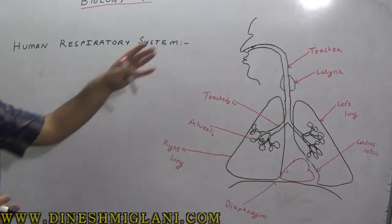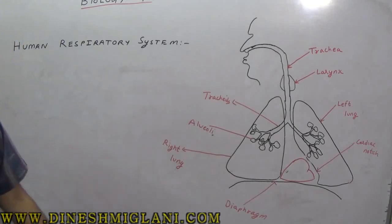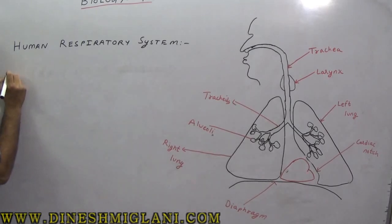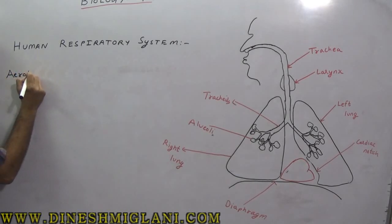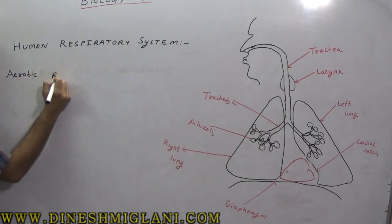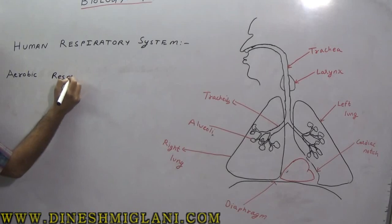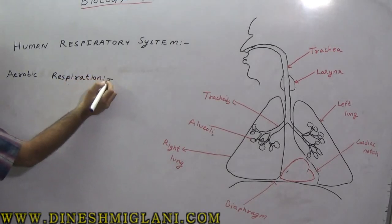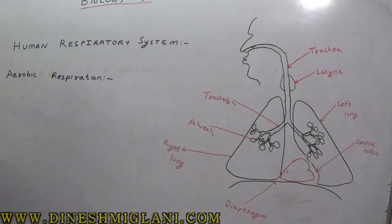Respiration is the work of the human respiratory system. Now, respiration is of two types. The first is aerobic respiration — that is, respiration which occurs in the presence of air or oxygen, where oxygen is utilized. In our body, only aerobic respiration takes place.